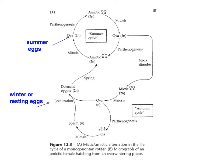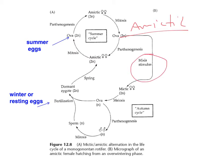Here is a diagram of the same life cycle. Summer eggs are produced via mitosis from amictic females and develop parthenogenetically into diploid amictic females, which again produce eggs via mitosis — still diploid — and around and around we go. That's the summer or amictic cycle. Then a mixis stimulus — winter-type conditions — causes females to start producing eggs via meiosis.